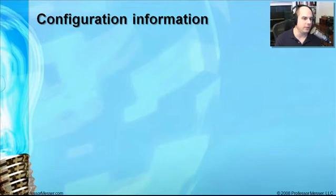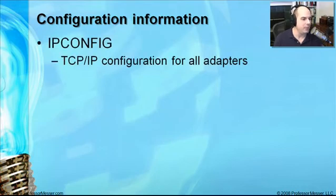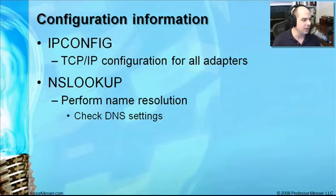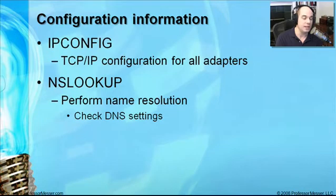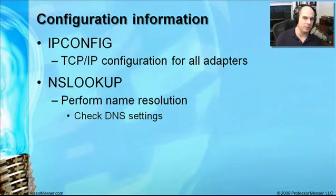We can also look at the configuration inside your computer and how it's configured to run on the network. If we've verified the link and confirmed the cable is okay, we may need to look at how we've configured TCP/IP. There's a command called ipconfig that gives you TCP/IP configuration information for all adapters in your computer. There's also a command called nslookup — if you're on the network but can't reach Google, you can perform a lookup from the command line that goes to your name server, does the resolution, and returns the answer, confirming your DNS settings are correct.